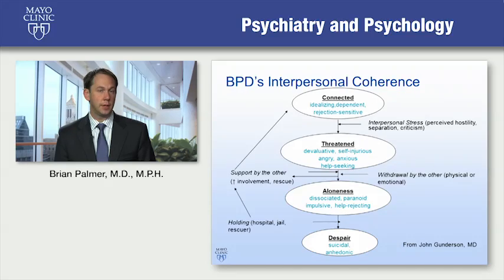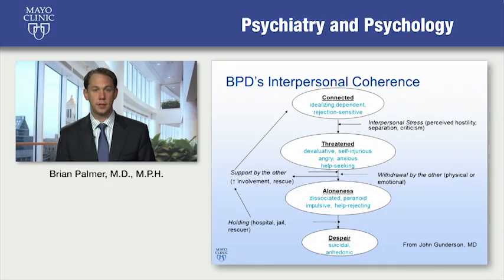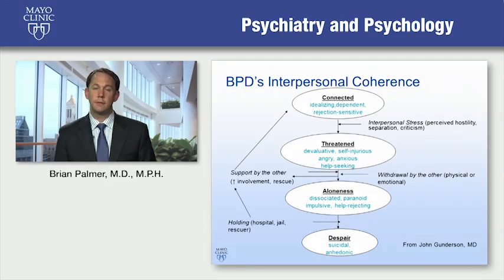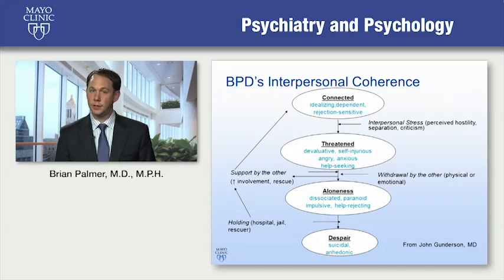In reaction to these behaviors, either the other person withdraws — in which case the patient is alone, shown on the right side of the slide — or on the left side, the other person increases their support, and the patient returns to feeling held and can again feel idealizing and dependent. If aloneness does emerge, this is when we see dissociated, paranoid, impulsive, and help-rejecting phenomena. When met with further withdrawal, patients often become quite desperate, and borderline patients are at real risk of killing themselves when they conclude they are not lovable.